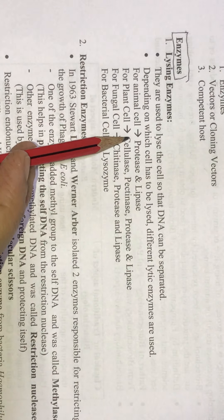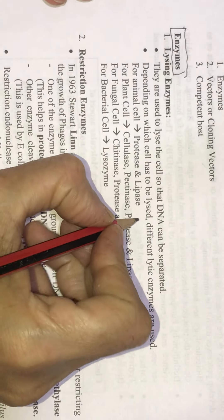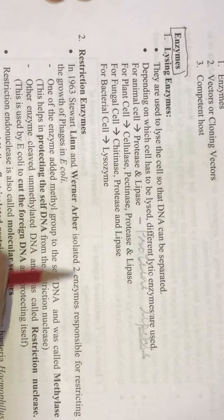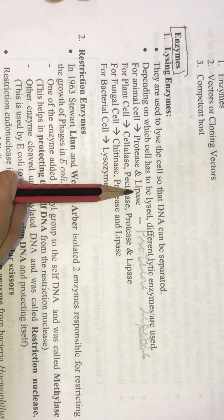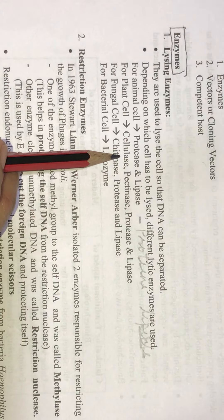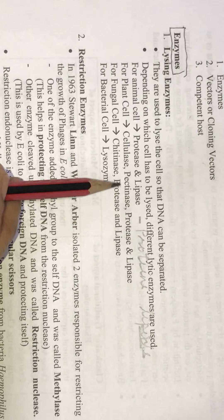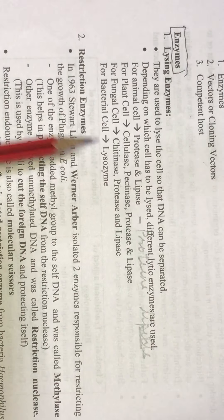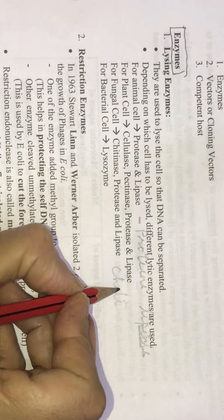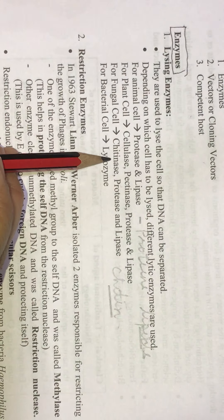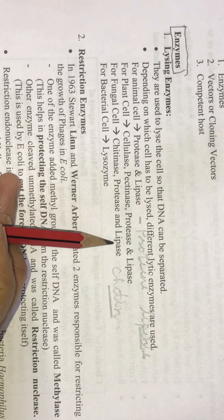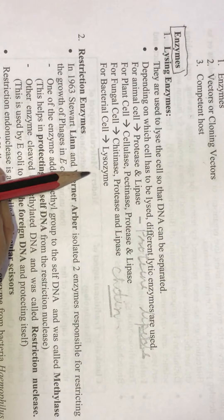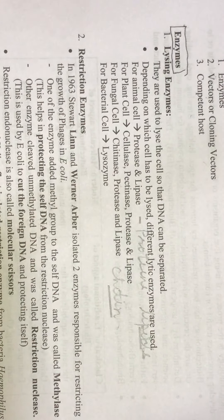For plant cells, there is cellulose in the cell wall and pectin, so cellulase is used for cellulose and pectinase for pectin. For fungal cells, the cell wall is made up of chitin, so chitinase is required along with protease and lipase. For bacterial cells, there is an enzyme called lysozyme which helps break the bacterial cell wall so that DNA can be separated.